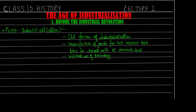Proto-industrialization was the manufacture of goods, but not in factories. It used to be manufactured for the international market, but in small units, and products were available for use at a domestic level. In many areas, proto-industrial units were widespread.